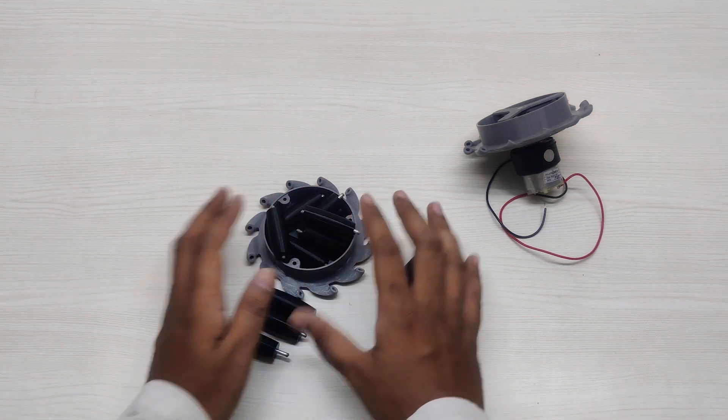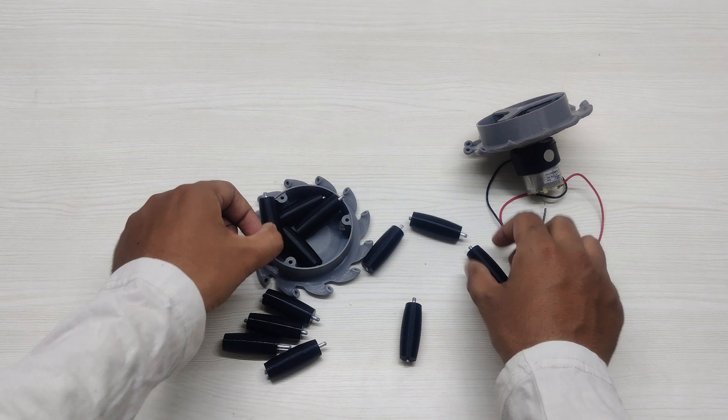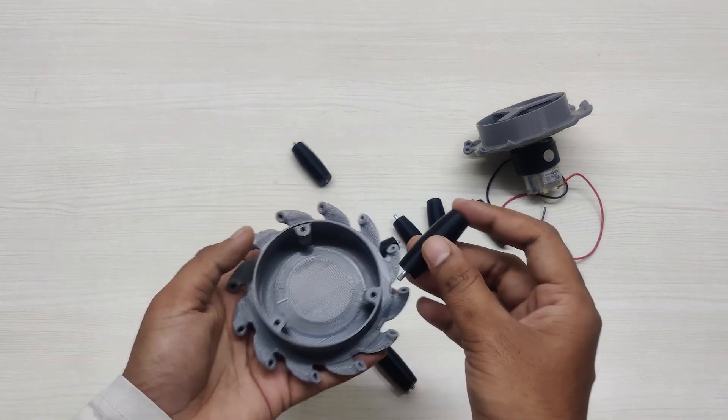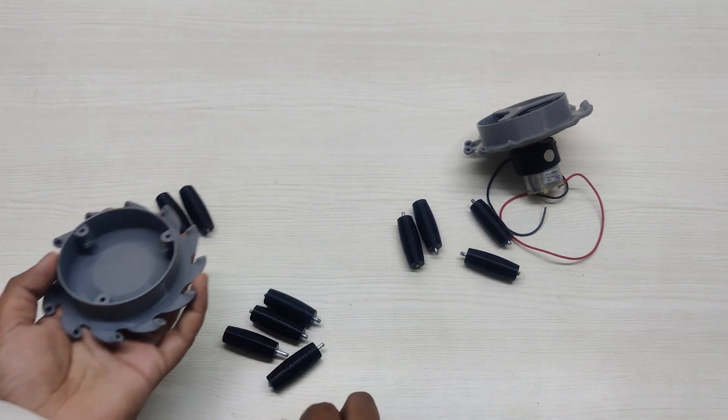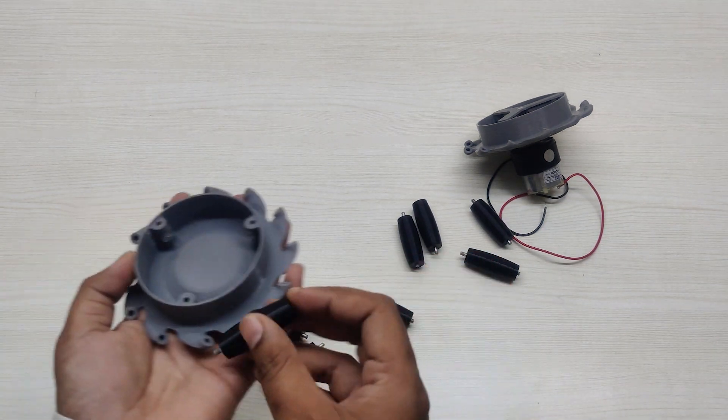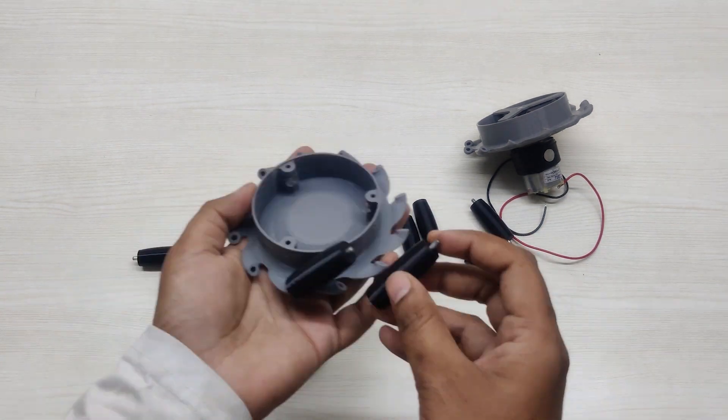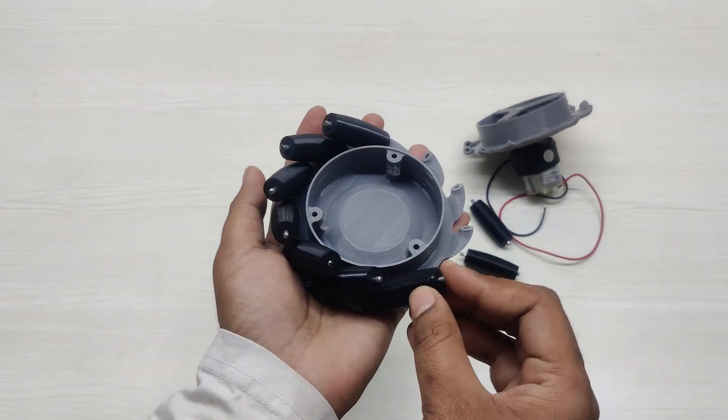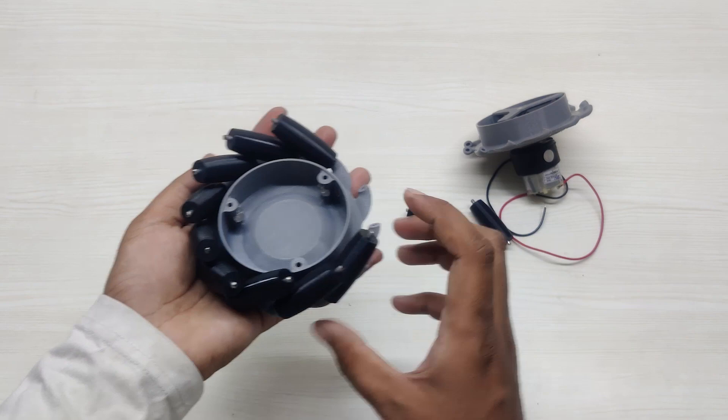So first assemble all the rollers on the outer part of the wheel. You can choose the motor RPM according to your requirement, but don't go beyond 150 RPM because the rollers are made of 3D printed material and they are brittle in nature. So the friction between the roller and the contact surface is very less and thus our wheel will skid.